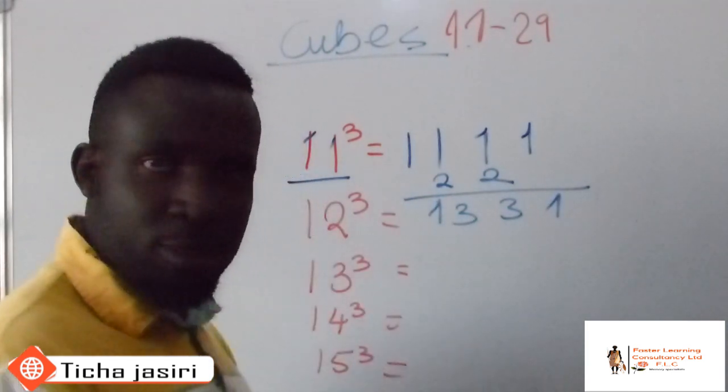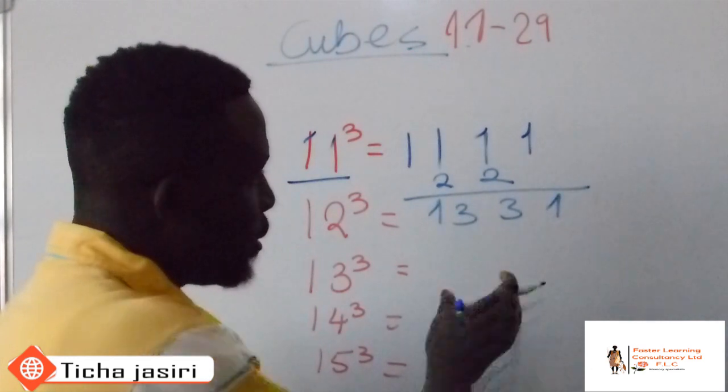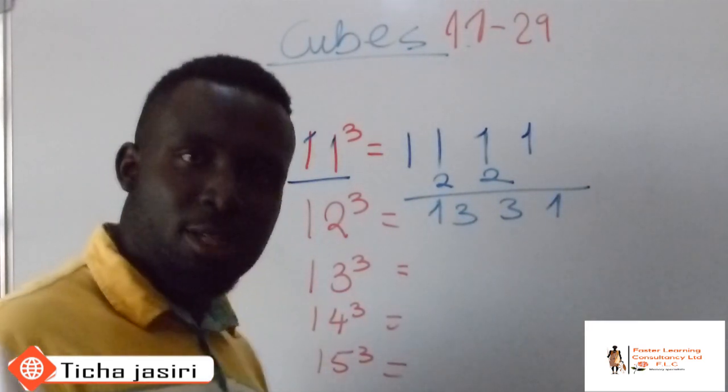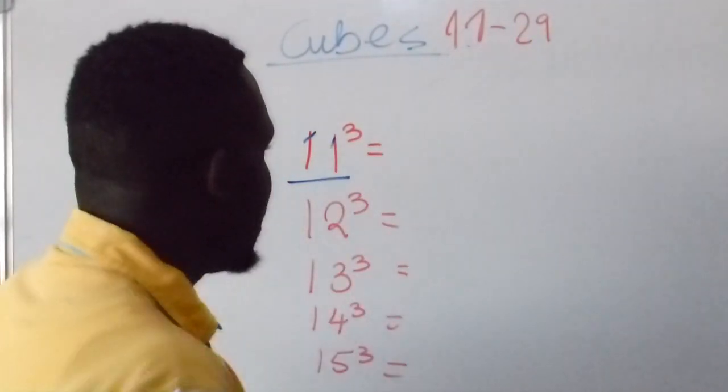This is the shortcut of doing it. Instead of all the long procedure, 11 multiply by 11 multiply by 11, you just do something like this and you have your answer. So let's look at 12, how 12 also works.